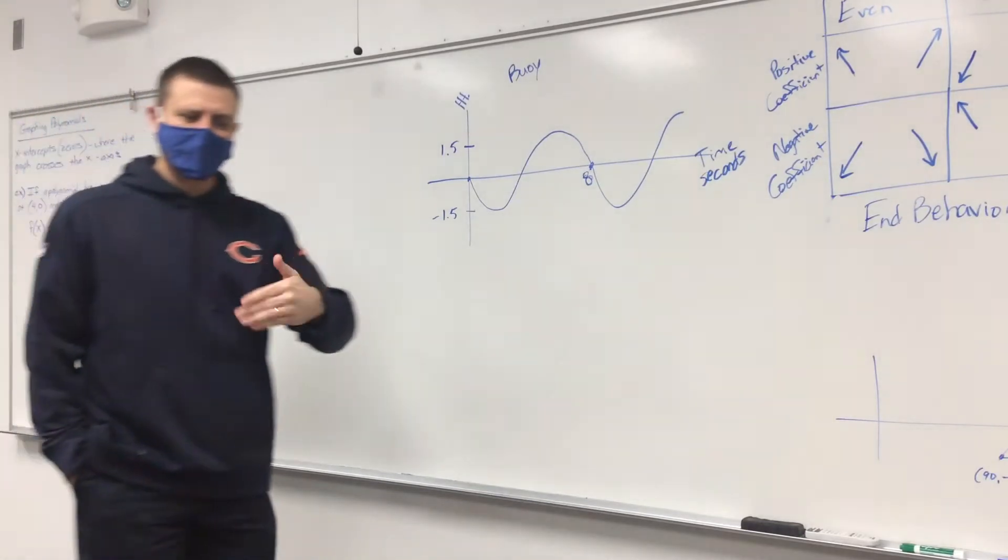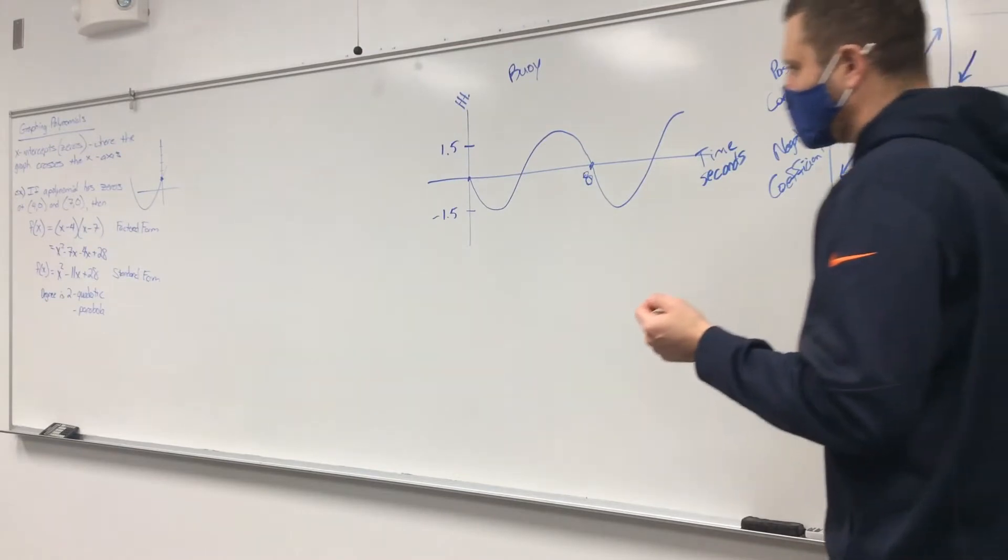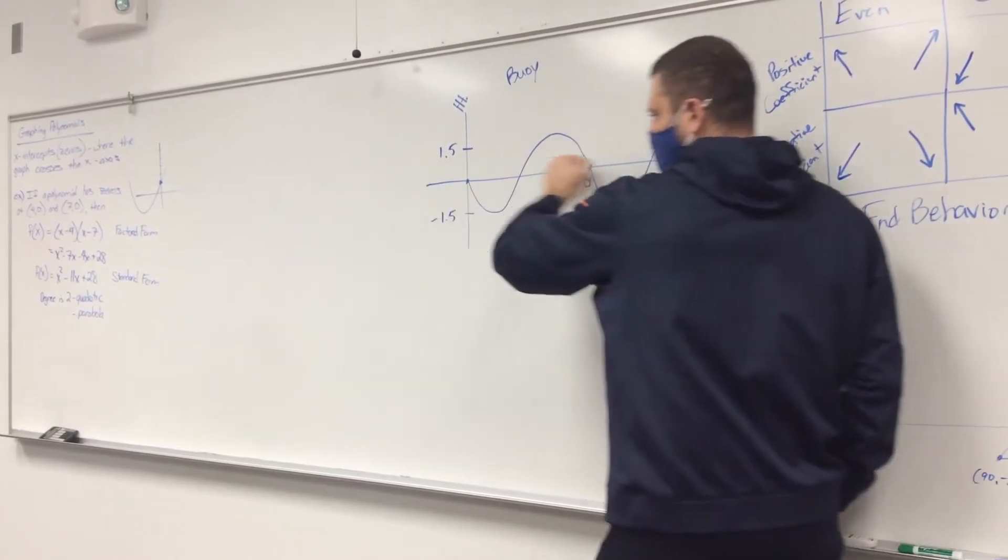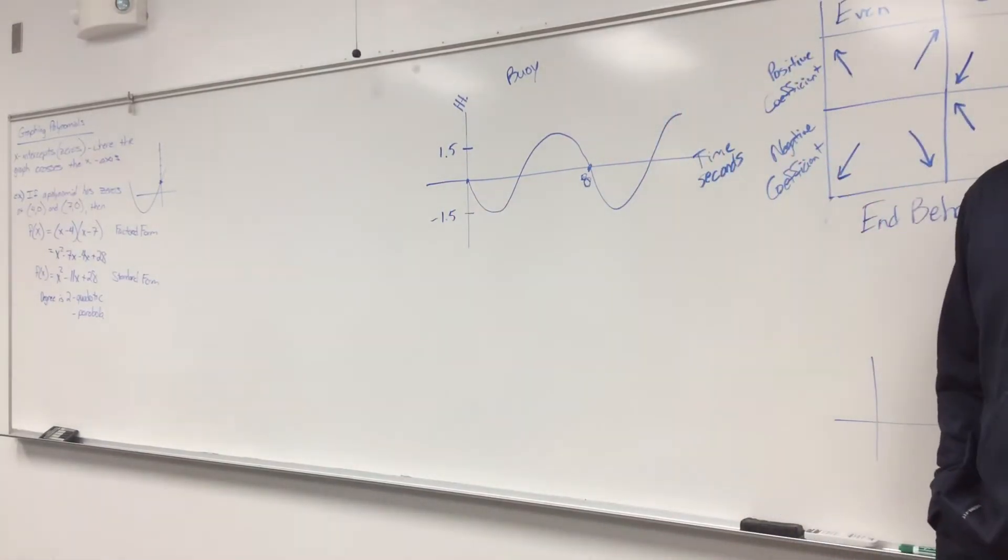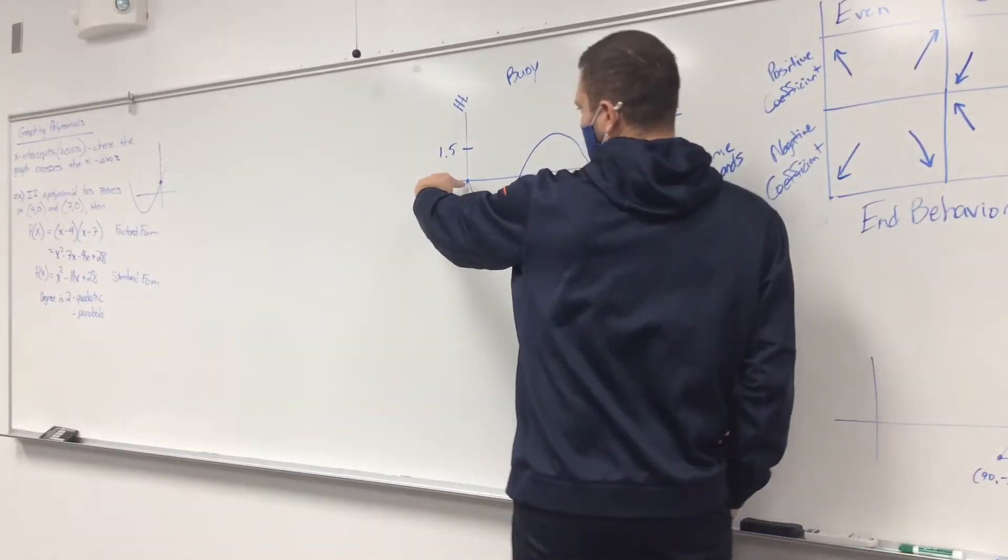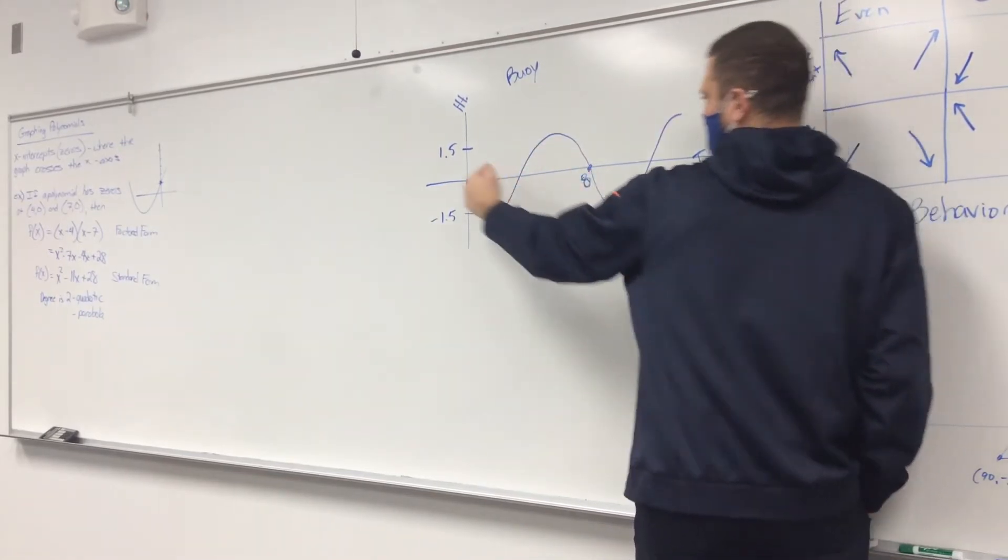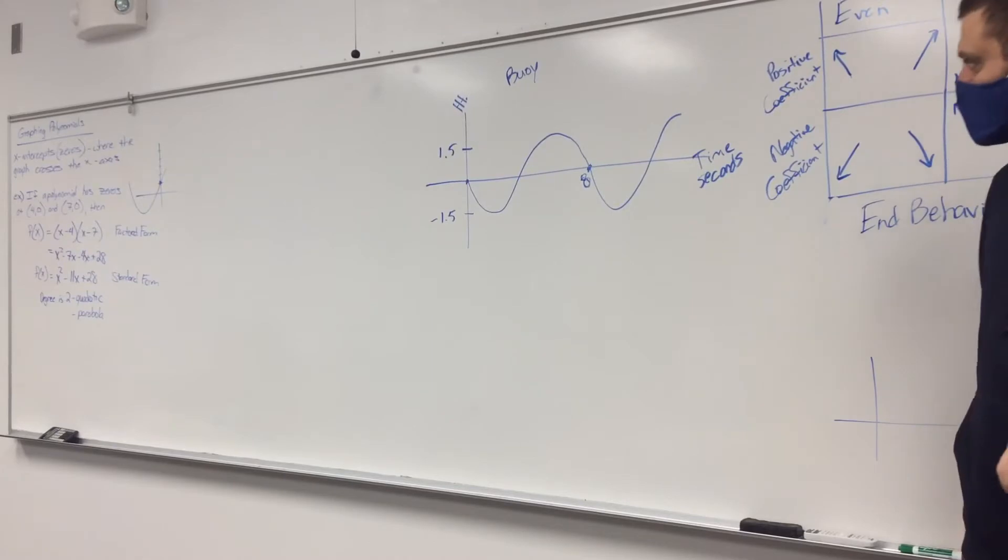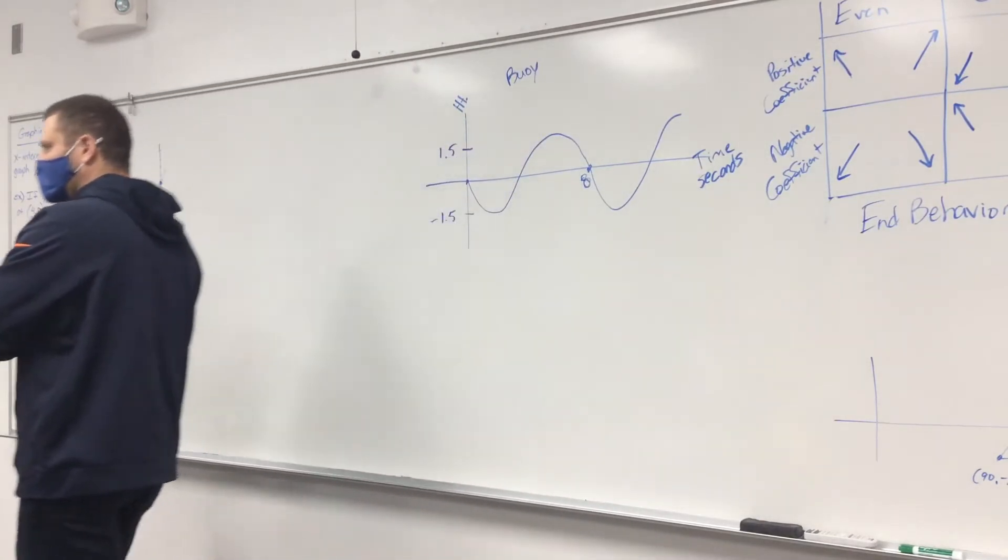So they basically told you it takes eight seconds to complete one full cycle, which is the period, right? They want you to write an equation that represents the height of this buoy, assuming it starts at its equilibrium point. So that's like saying it starts at sea level, or it starts at its midline, and is on its way down from the point when t equals zero going forward. So here's the graph that would represent what this buoy is doing. We're starting in the middle, we're headed down, we go back up, and so on. It takes eight seconds for it to complete one full period. Our job is to write the equation for this.